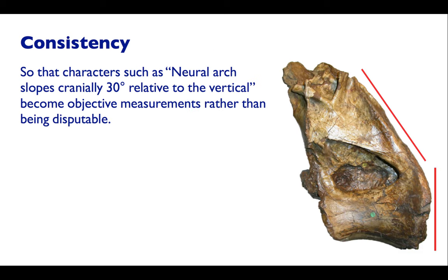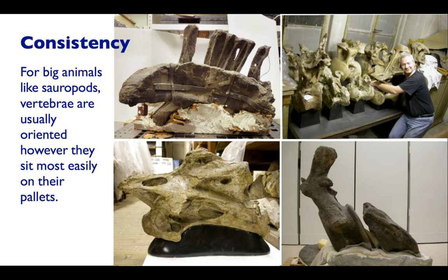We want characters like 'neural arch slopes cranially 30 degrees relative to the vertical' to be objective measurements, rather than something disputable based on aesthetic preference for which horizontal looks best. Consistency is hard to come by, particularly with sauropods — they're big animals and their vertebrae tend to be mounted in whatever way makes them sit most comfortably on bits of plaster, or sometimes in the rock they're excavated on. Here we can see a sacrum, some dorsal vertebrae, cervical vertebrae, and a couple of caudals from near the base of the tail, all oriented based on whatever stands they happen to have.